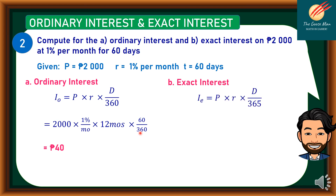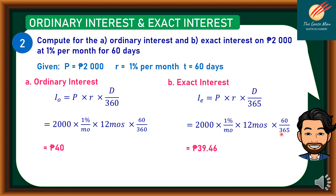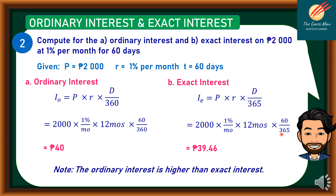For the Exact Interest, I sub E is equal to Principal times Rate times D over 365. So we have 2,000 times 1% per month times 12 months times 60, all over 365. The answer is P39.46. Take note that the Ordinary Interest is higher than Exact Interest. That ends our discussion on Ordinary Interest and Exact Interest.